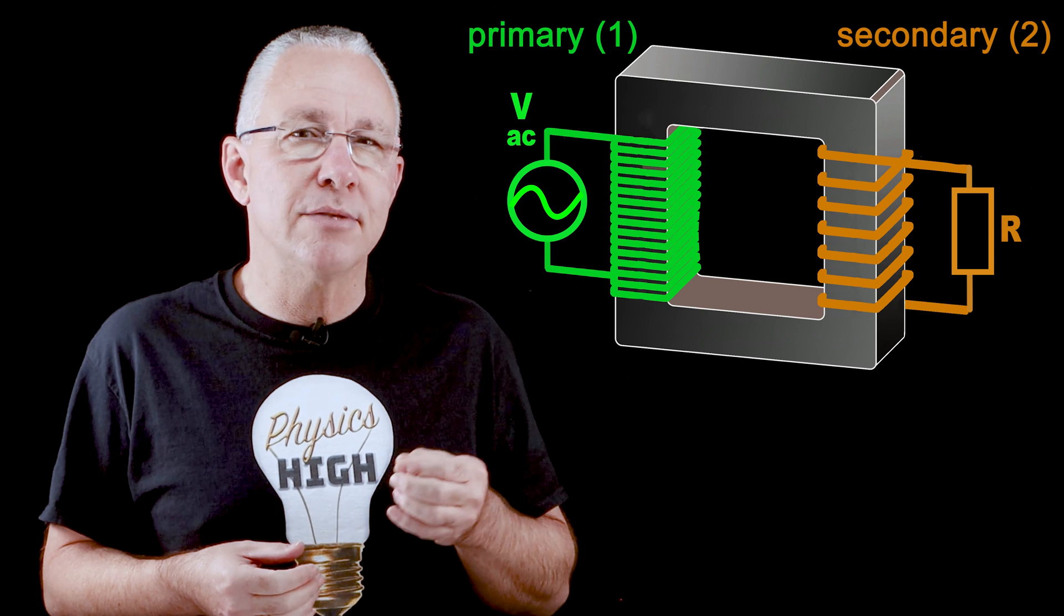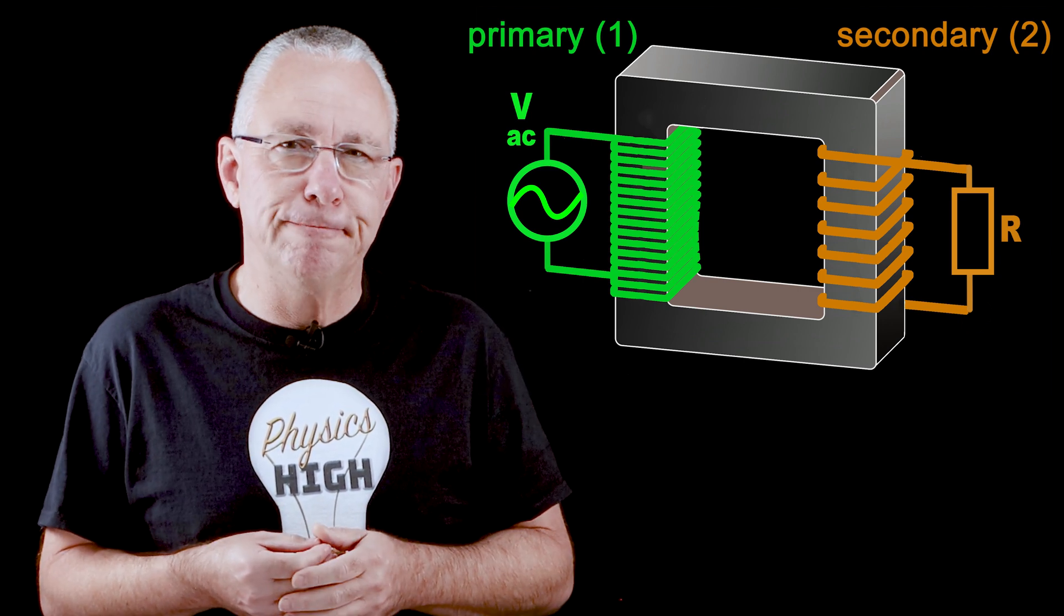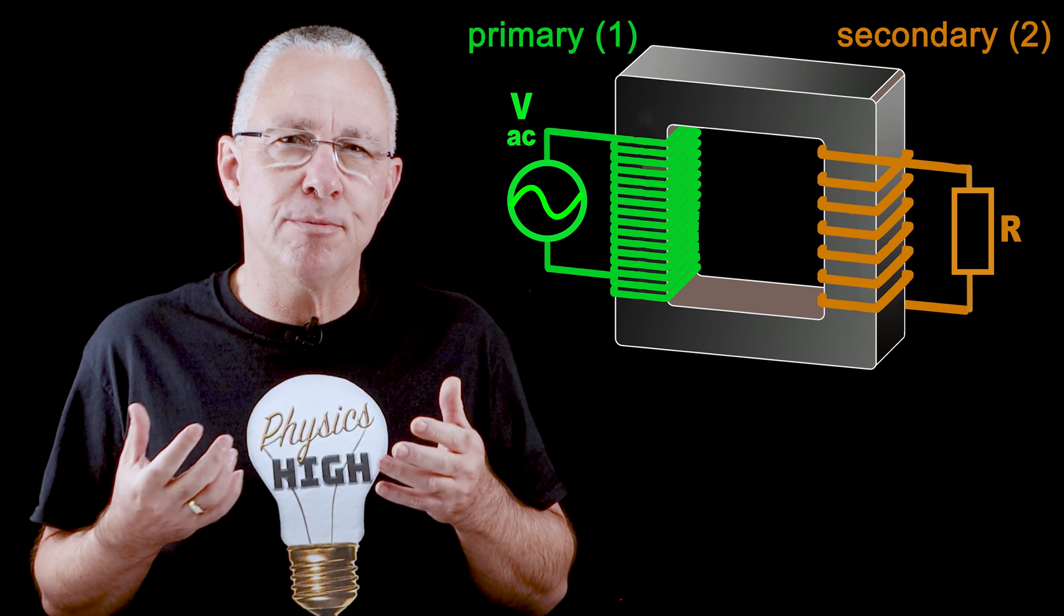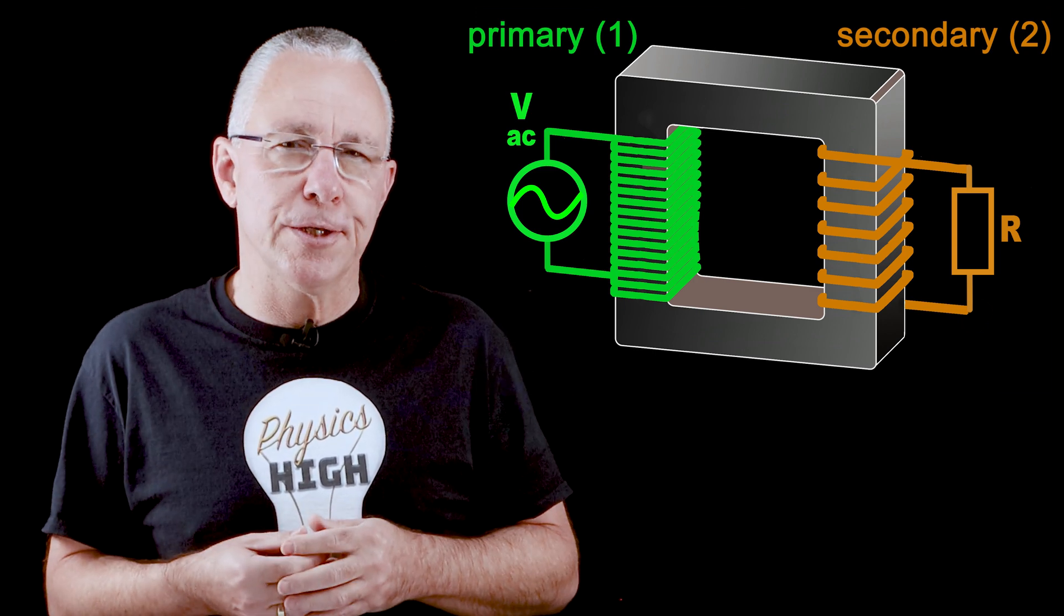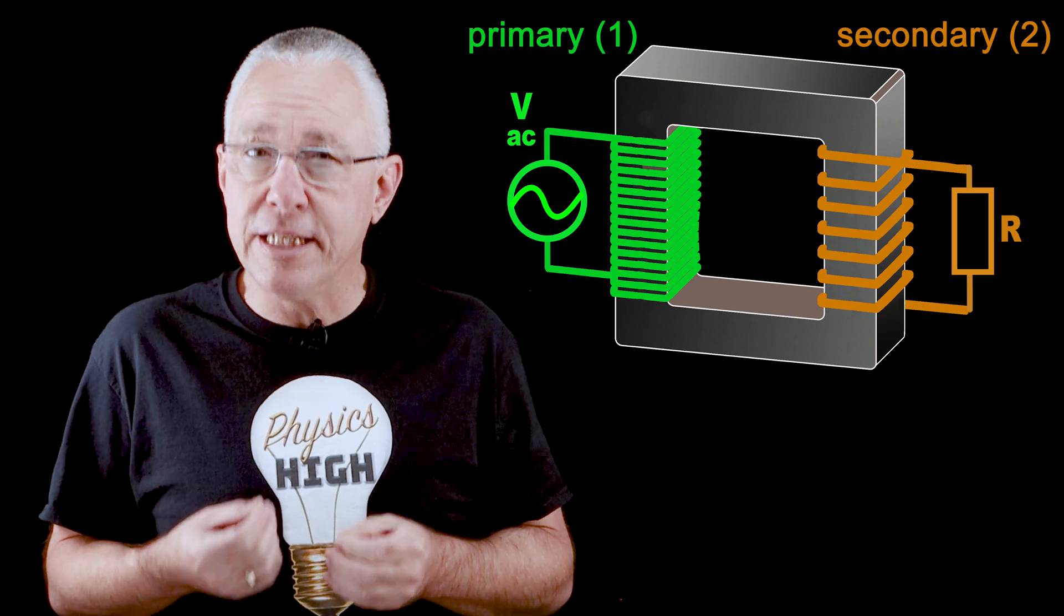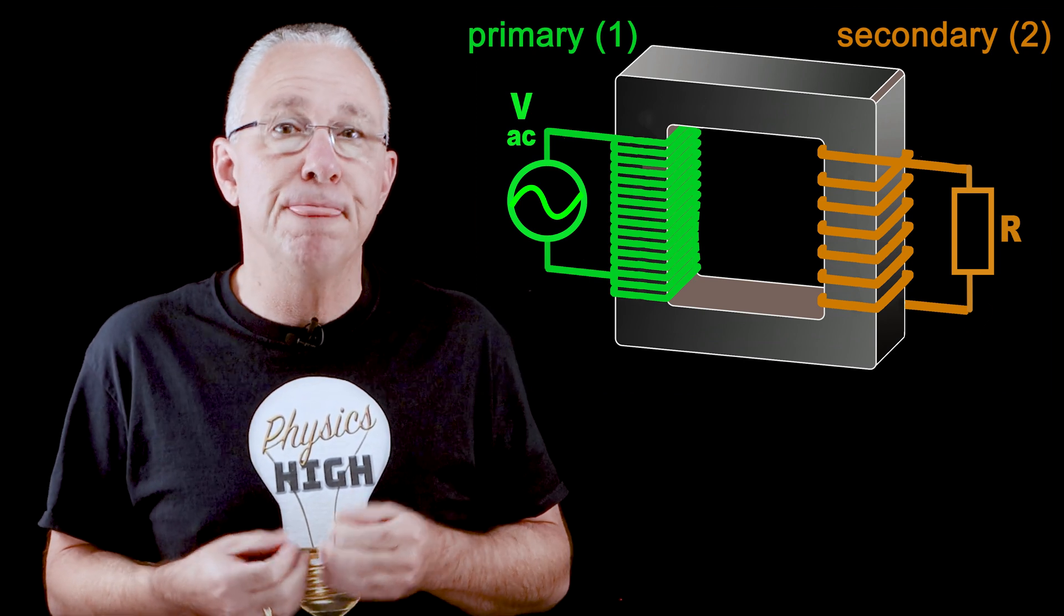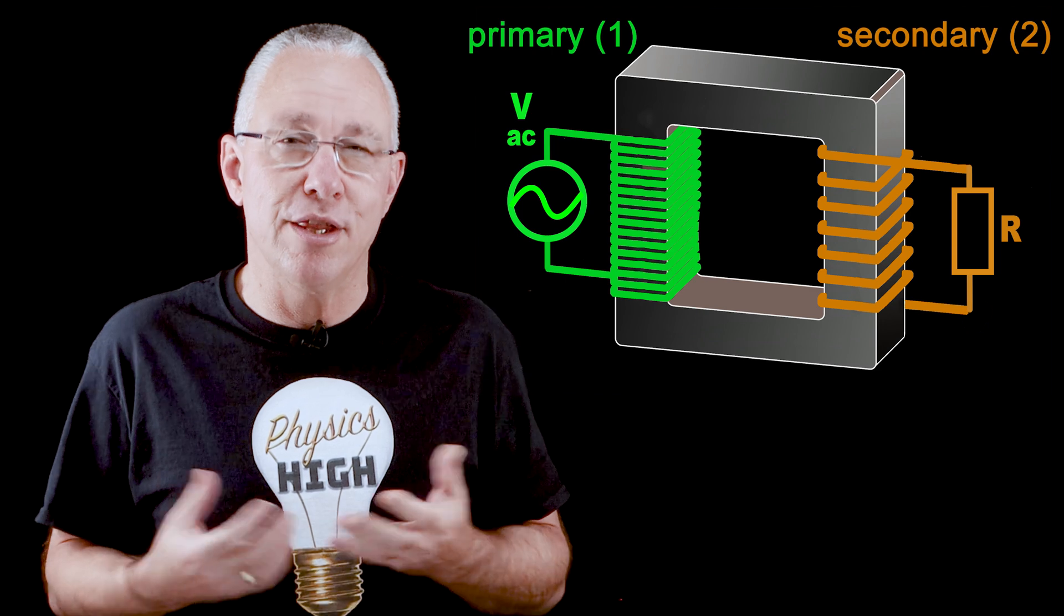Now when connected to a circuit, this results in an induced current. Now what a transformer does is have different numbers of turns between the two coils. The result is that the output voltage will be different to the input voltage. Hence, it transforms the voltage.